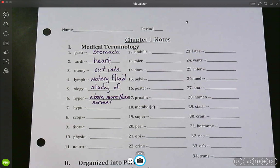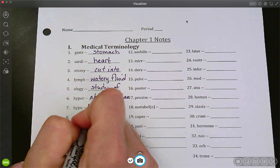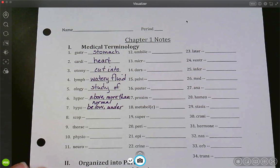Now if hyper is above, then what would hypo be? Should be below or under. Below or under. So someone who has a hypo secretion of the growth hormone would be very short.